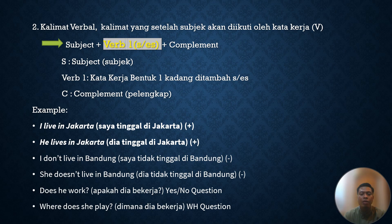Nah yang kedua ini yang fokus kita pelajari karena ada beberapa perubahan di sini, untuk kalimat verbalnya. Kalimat verbal itu kalimat yang setelah subjek akan diikuti oleh kata kerja. Jadi dalam namanya saja verbal, berarti di dalamnya ada kata kerja atau verb. Kalau kita lihat formulanya: subjek plus kata kerja bentuk pertama. Ingat, yang kita tulis itu kata kerja bentuk pertama yang nantinya kadang akan ditambahkan S dan juga kadang akan ditambahkan ES, kemudian plus complement.